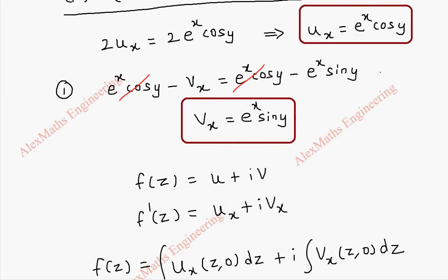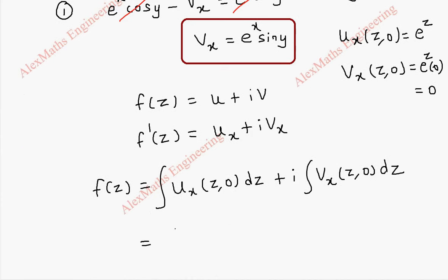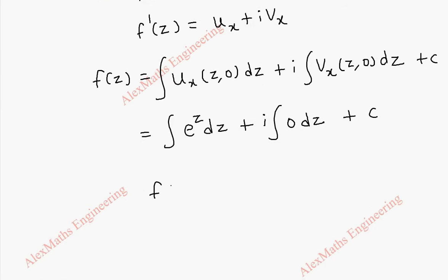From here we find ux(z, 0): every x changes to z and y changes to 0, giving e^z. And vx(z, 0) becomes e^z·sin 0 equals 0. So f'(z) equals e^z. Integrating: f(z) equals the integral of e^z dz plus i times integral of 0 dz, which gives f(z) = e^z + c. Thus we have found the analytic function f of z in terms of z.